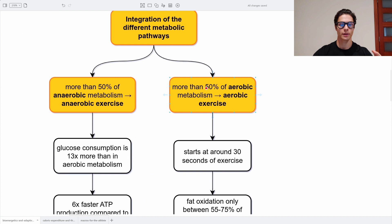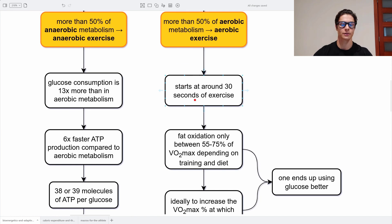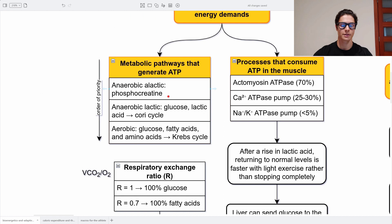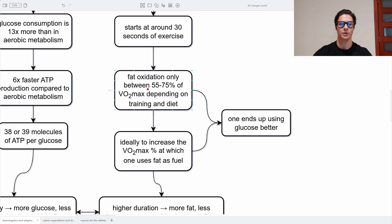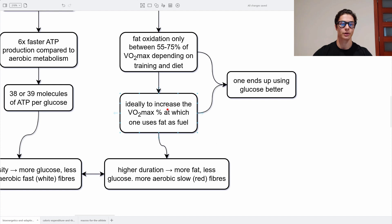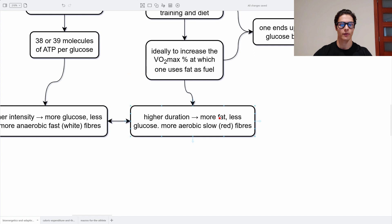When we have more than 50% aerobic metabolism, it is considered aerobic exercise, and this starts around 30 seconds into the exercise. Phosphocreatine lasts 5 to 10 seconds, then anaerobic glycolysis creating lactic acid lasts about 25 seconds, and after that 30-second mark we enter aerobic metabolism. Fat oxidation only occurs between 55 and 75% of VO2 max, depending on training and diet. Ideally we want to increase the VO2 max percentage at which we can use fat as fuel, preserving glucose for later — if one knows how to use fat properly, one ends up using glucose better. At higher duration, more fat is used and less glucose, using more aerobic slow red fibers.